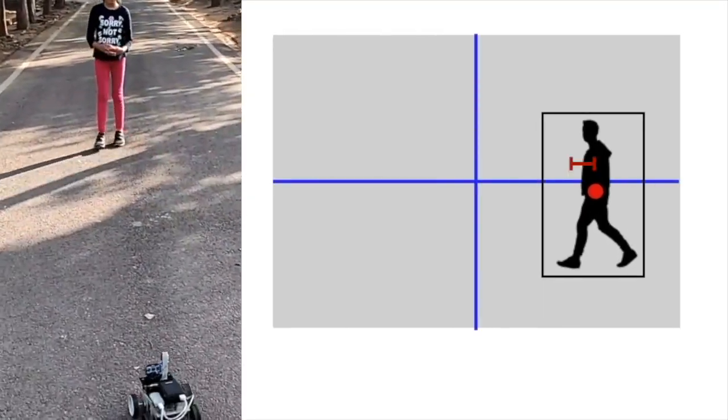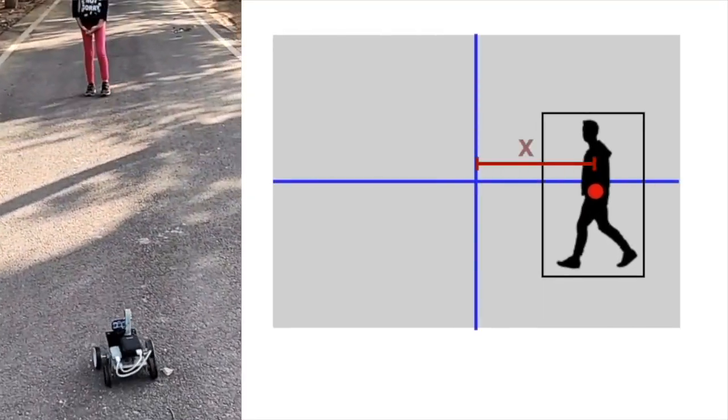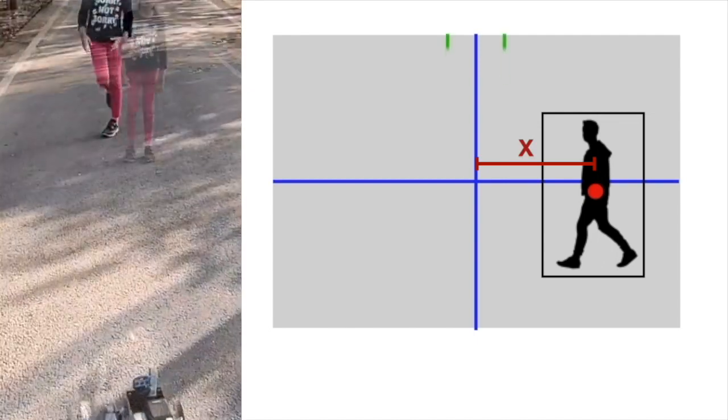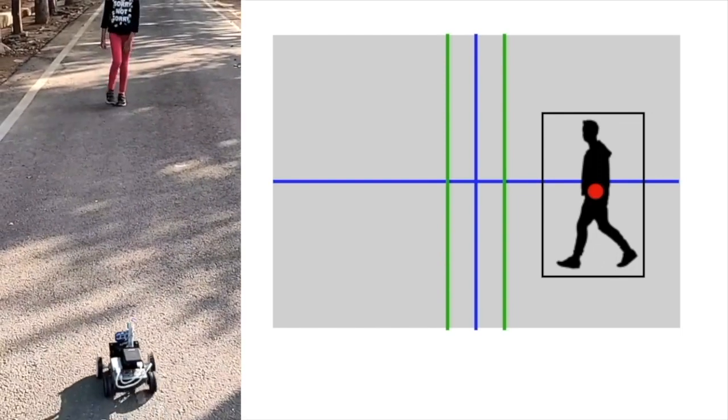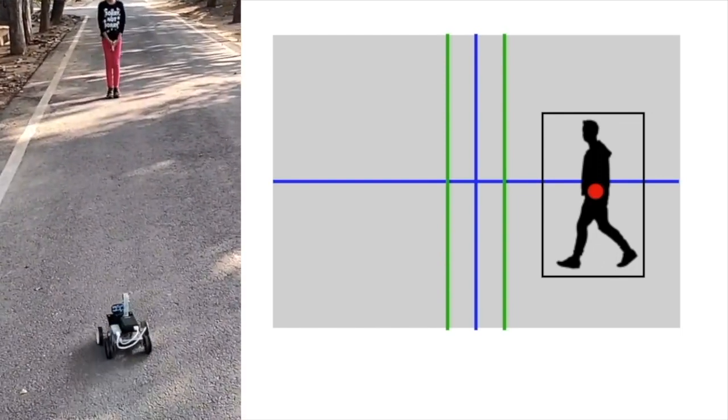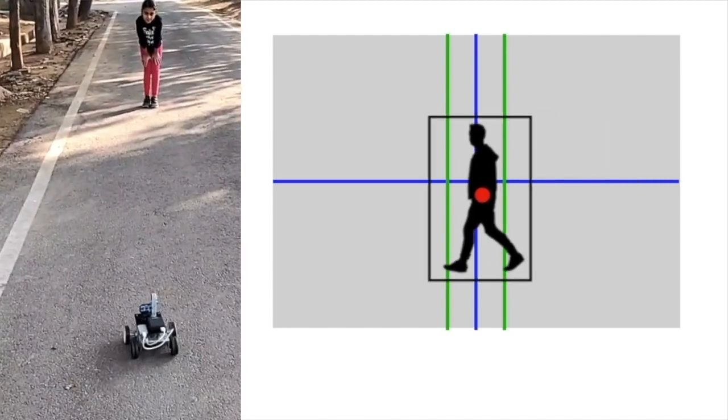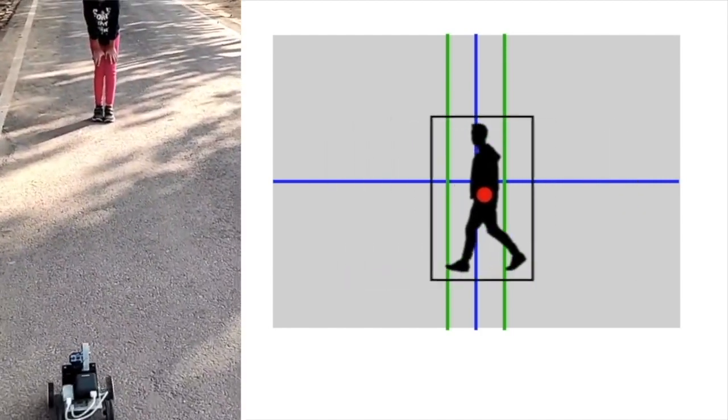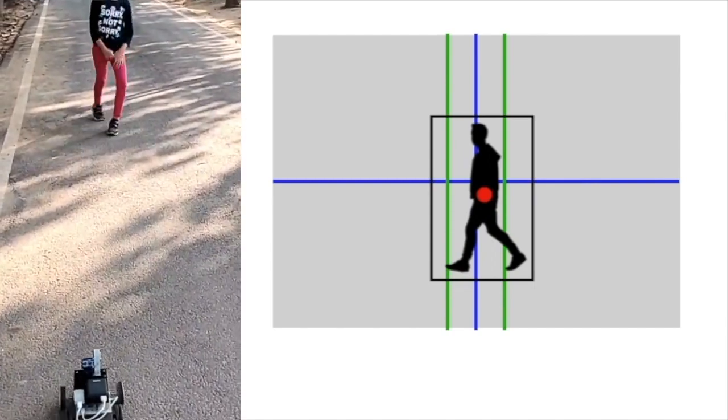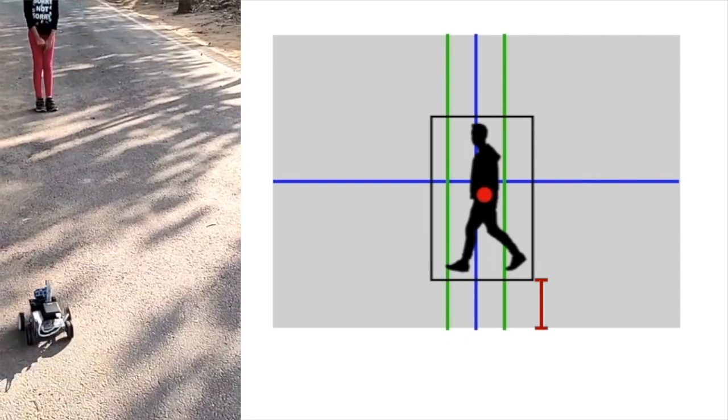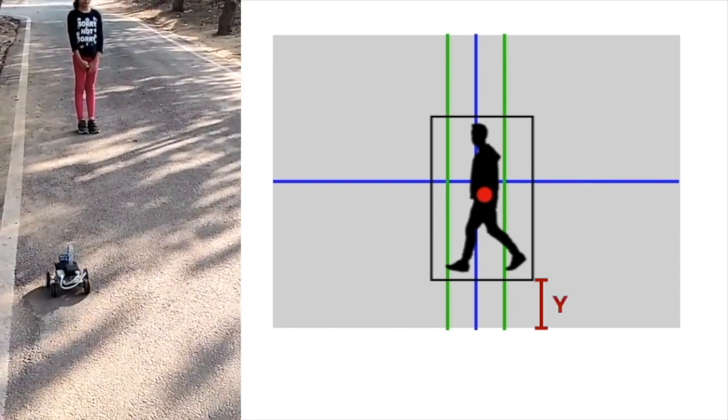The deviation of center of person from the center of frame determines left and right commands. The green lines show acceptable tolerance. When the person is not within the green line, the robot moves left or right to bring the person in the center of the frame. Once the person is in center, the code monitors the distance between the bottom edge of the bounding box and the bottom edge of the frame.